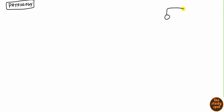Now let's talk about the physiology of potassium. Let's just talk about its main function. Here's a cell, and what I've drawn is a cell with the sodium-potassium ATPase pump. This pump pumps out 3 sodiums and pumps in 2 potassiums. This pump is very important because it maintains the resting membrane potential at negative 70 mV.